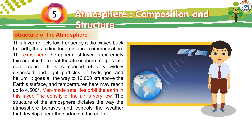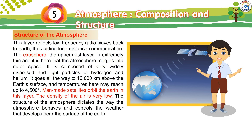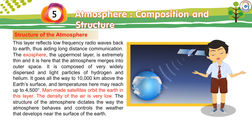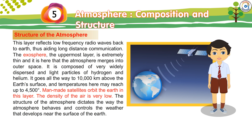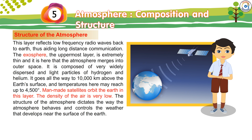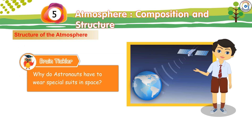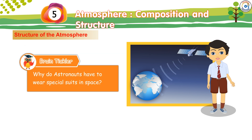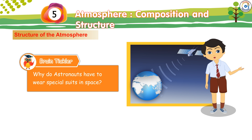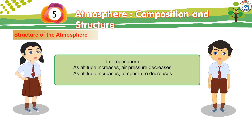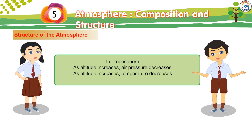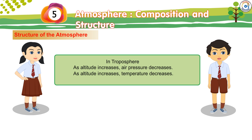The density of air in the exosphere is very low. The structure of the atmosphere dictates the way the atmosphere behaves and controls the weather that develops near the surface of the Earth. InfoHive: Planet Mercury has no atmosphere. Brain Tickler: Why do astronauts have to wear special suits in space? In the troposphere, as altitude increases, air pressure decreases. As altitude increases, temperature also decreases.